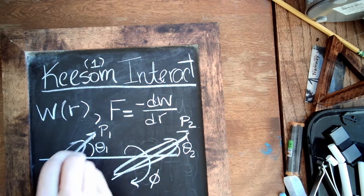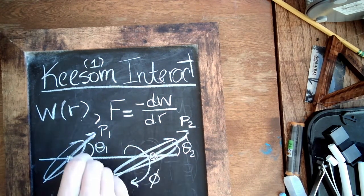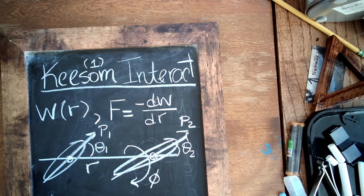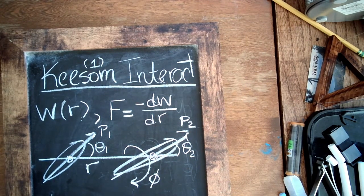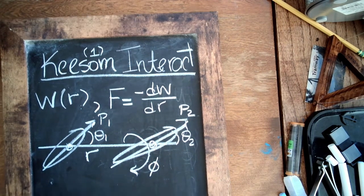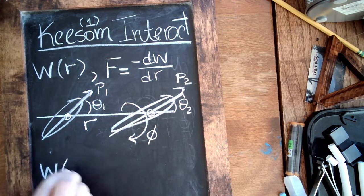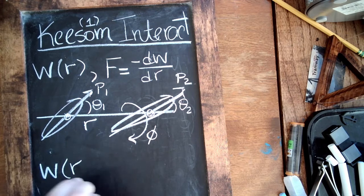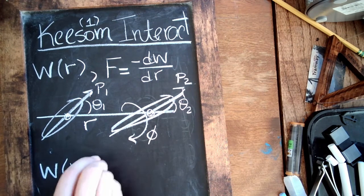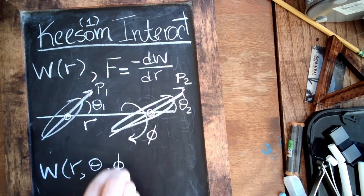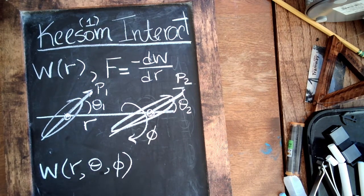And then r we can say is the distance between the center of the dipoles. So with this we can imagine that the potential now depends not only on r but also on theta and phi, where theta is just meant to represent both of those angles.